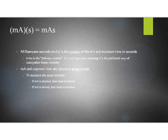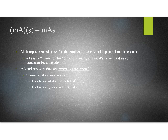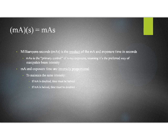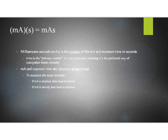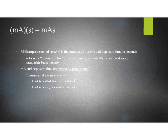mA and exposure time are inversely proportional. So, what that means is if I want to maintain the exact same technique, the exact same mAs, if I double my mA, I will need to half my exposure time. Conversely, if I half my mA, I will need to double my exposure time. Now, one of those is preferred, and we'll talk about why that is in a moment here. But, it's just something to be aware of that they are inversely proportional.